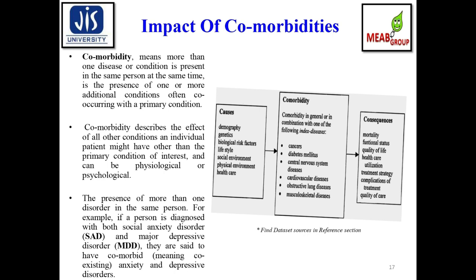Co-morbidity means more than one disease or condition is present in the same person at the same time — the presence of one or more additional conditions co-occurring with the primary condition. Co-morbidity also describes the effect of all other conditions an individual patient might have, which can be physiological or psychological. For example, if a person is diagnosed with both Social Anxiety Disorder (SAD) and Major Depressive Disorder (MDD), they are said to have co-morbid anxiety and depressive disorders.